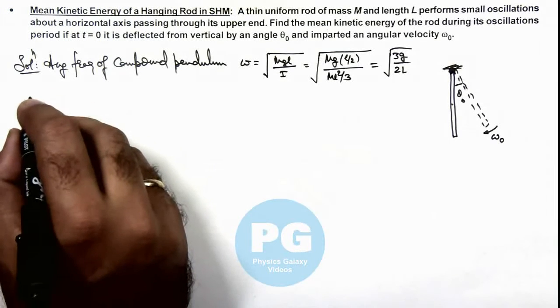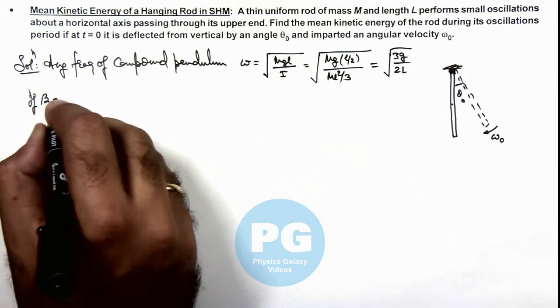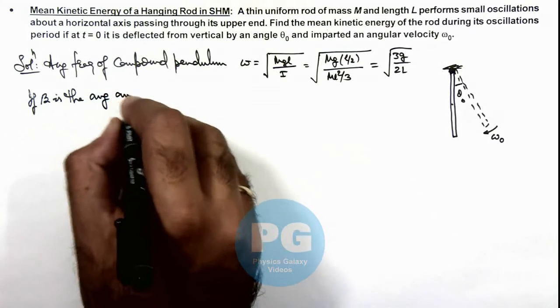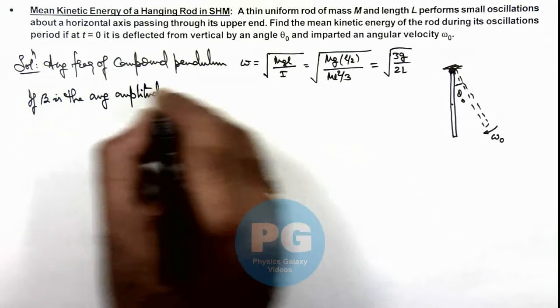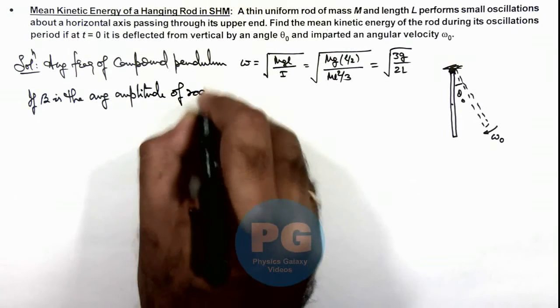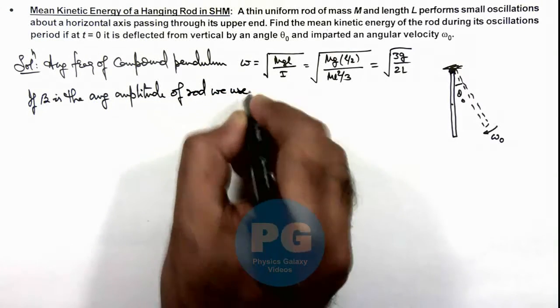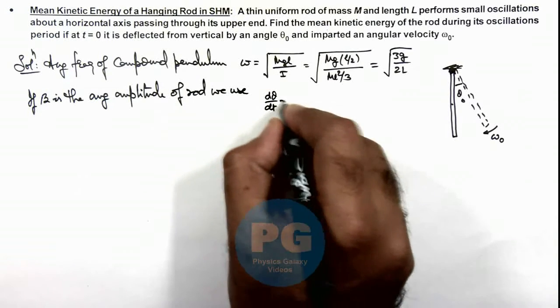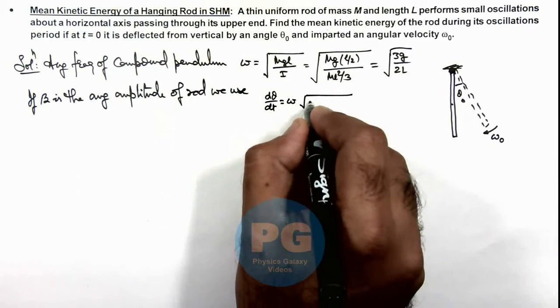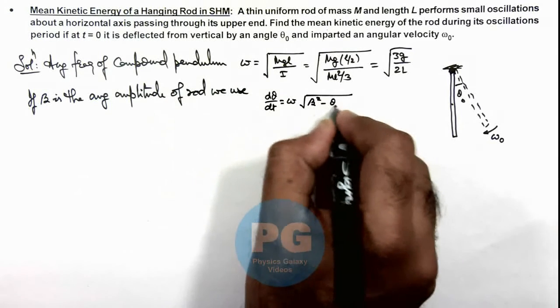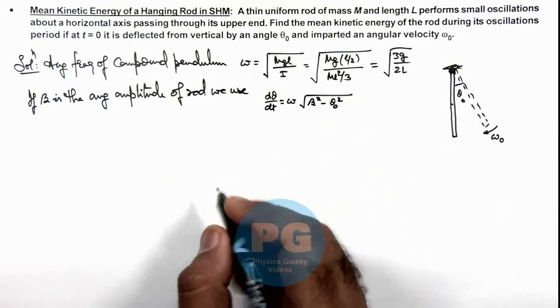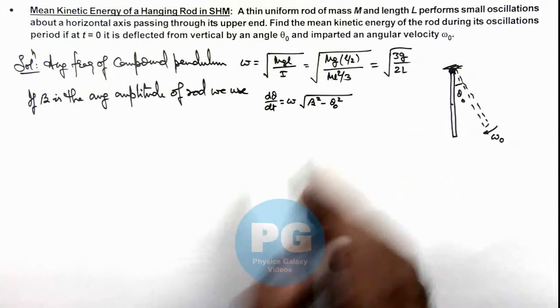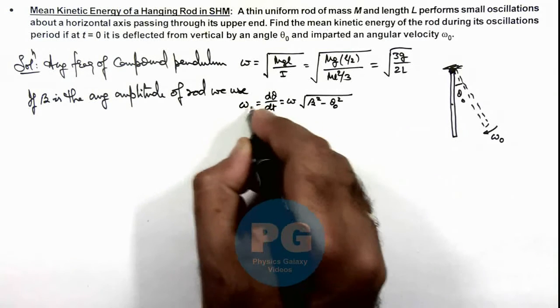Here we can also write if beta is the angular amplitude of the rod, we use the relation d theta by dt equals omega root of beta squared minus theta not squared. Where d theta by dt is the angular speed when it is at a position theta not, and this is given to us as omega not.